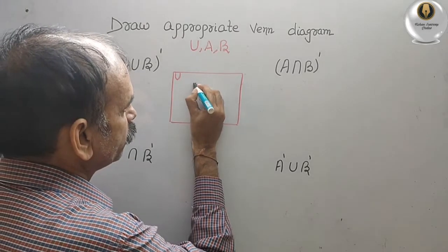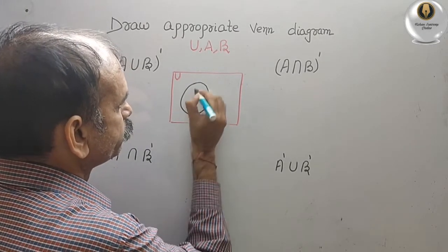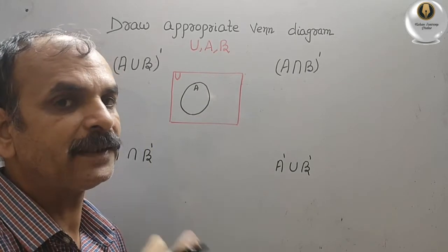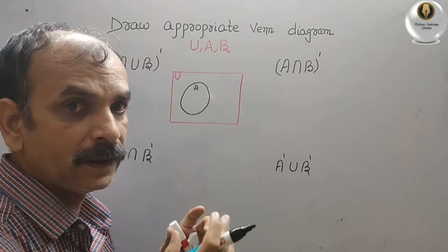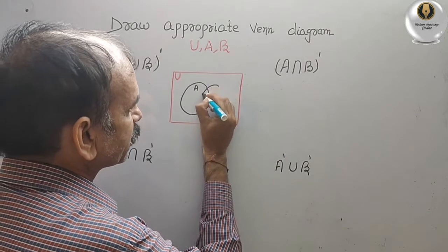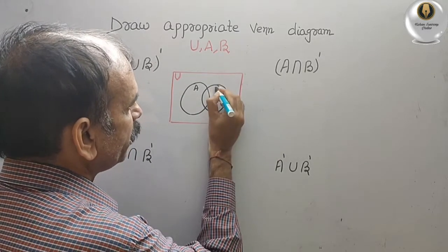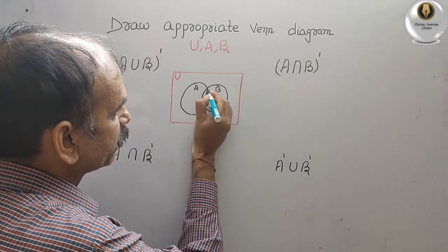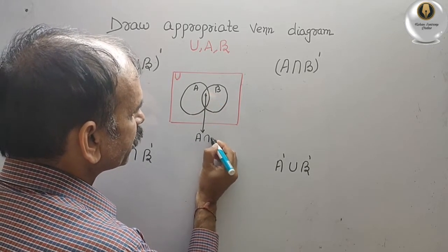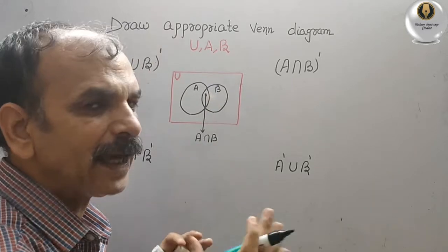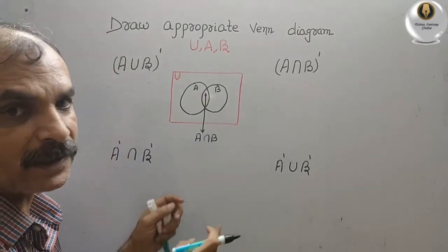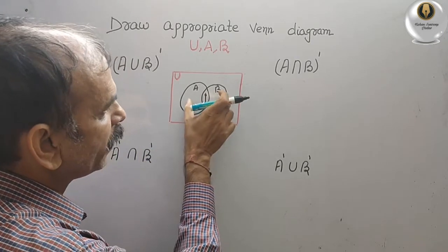So we will make A and B. Suppose this is your A now. And we have to make one more circle — it represents B. It may be intersecting or may not be intersecting, so we will make it just like this. This is your B. And this center part is your A intersection B part, meaning they are intersecting there.